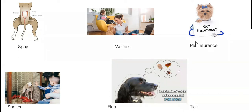Then we have 'pet insurance.' Just as we humans have insurance for emergencies — when you go to the hospital or something happens, your insurance covers the surgery or emergency costs — that also exists for pets. If your pet gets sick, needs surgery, or has an emergency and you have pet insurance, the insurance will cover part of the expenses, and that really helps a lot.